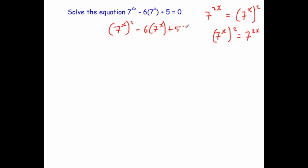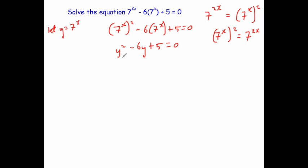Plus 5 equals 0. Notice I've got 7 to the power of x appearing twice, so I'm now going to let y equal 7 to the power of x. That gives us y squared minus 6y plus 5 equals 0.